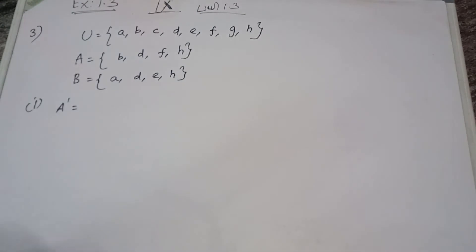Hi viewers, welcome to G Mathi Max. In this video, we are going to see Exercise 1.3, third question. They have given the universal set U and the sets A and B. They have asked so many things — 8 sub-questions are given. So one by one we are going to see.